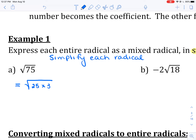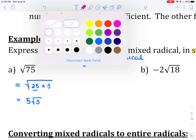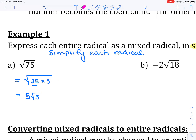25 times 3 gives us 75. I always tell students to underline the perfect square number you picked from the list. Now you're going to evaluate the square root of 25. The square root of 25 is just 5, and then the square root of 3 is an irrational number — it doesn't work out evenly, so we just leave the 3 as the radicand. You can do an extra step: rewrite this as the square root of 25 times the square root of 3.